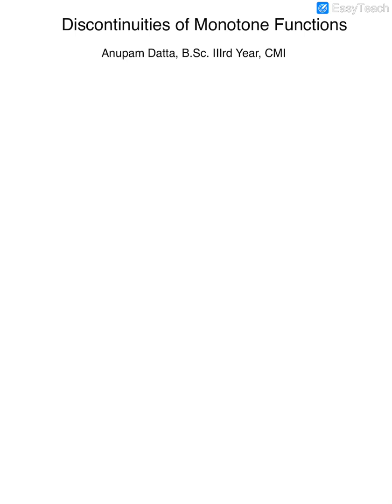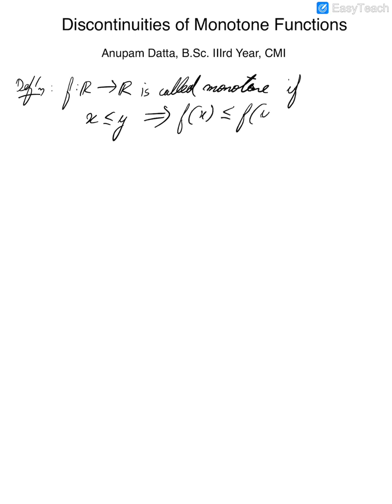Let us define what a monotone function is. f from R to R is called monotone if x ≤ y implies f(x) ≤ f(y), or x ≤ y implies f(x) ≥ f(y). This is non-decreasing and this is non-increasing.